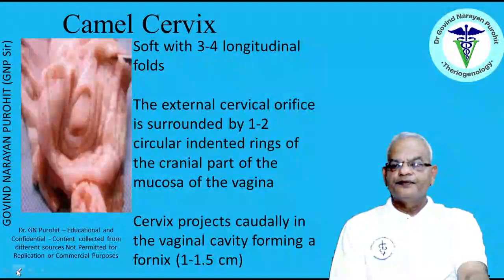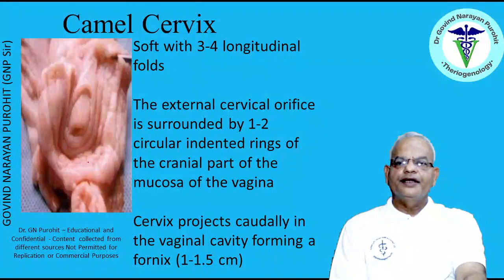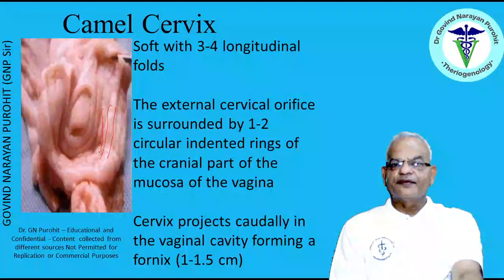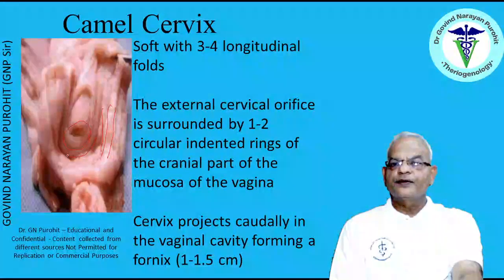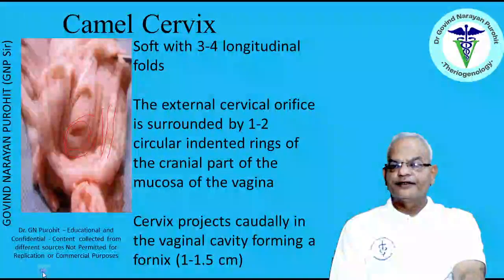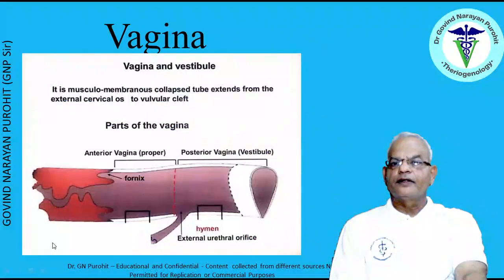The camel cervix is soft, just like the equine cervix — one can pass a finger inside. It has three to four longitudinal folds, and the external cervical orifice is surrounded by one to two circular folds forming the cranial part of the vagina. The cervix projects cranially into the vaginal cavity, forming a small fornix.